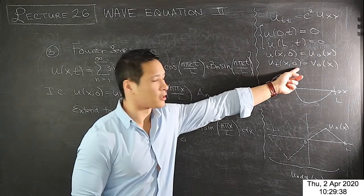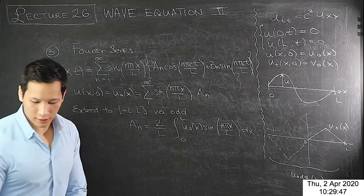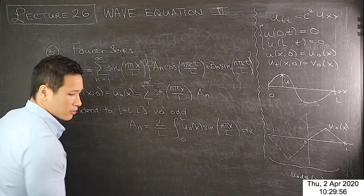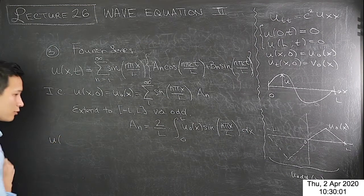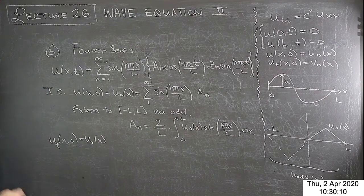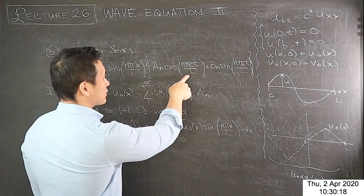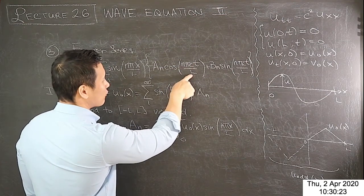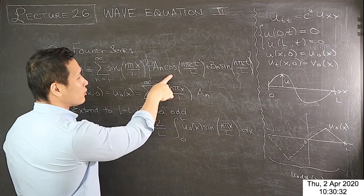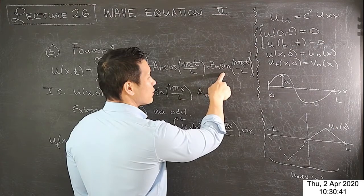Now we have the initial condition for initial velocity: u_t(x,0) = v₀(x). You take the time derivative of the Fourier series formula. When you differentiate, the factor nπc/L comes out, cosine switches to minus sine, sine switches to cosine. Applying t = 0, the cosine that switched from sine becomes 1, leaving the sum from 1 to infinity of sin(nπx/L) times (nπc/L) times b_n.